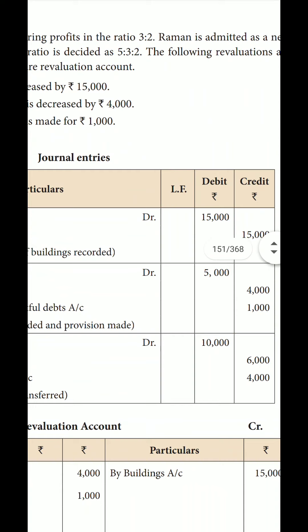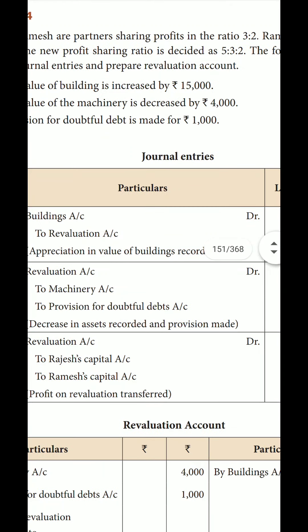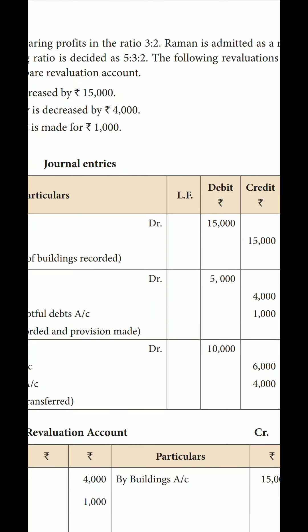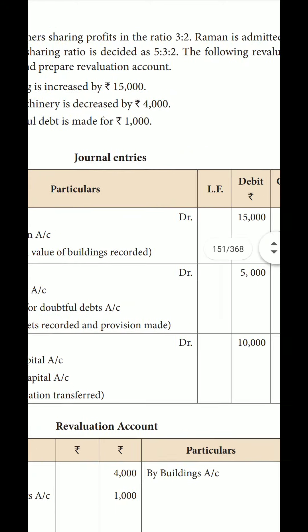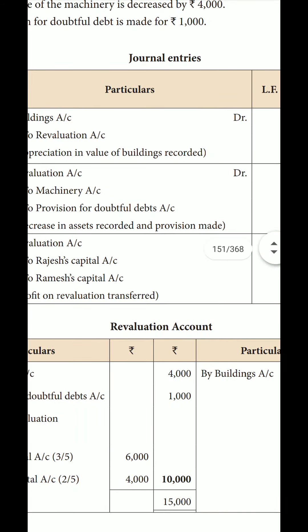If the net profit is 10,000 and the ratio is 3 to 2, we divide: 10,000 divided by 5 gives 2,000 per share. Rogers gets 2,000 multiplied by 3 equals 6,000. Ramesh gets 2,000 multiplied by 2 equals 4,000. These are the journal entry amounts for distributing the profit on revaluation.